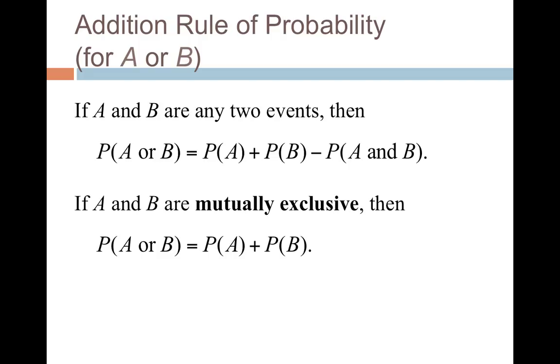So in my example, the probability of getting a 5 in a deck of cards plus the probability of getting a queen in a deck of cards minus the probability of getting both. If our events are mutually exclusive, then I don't have to worry about that subtraction at the end because they don't overlap at all. So it would just be the probability of A plus the probability of B.